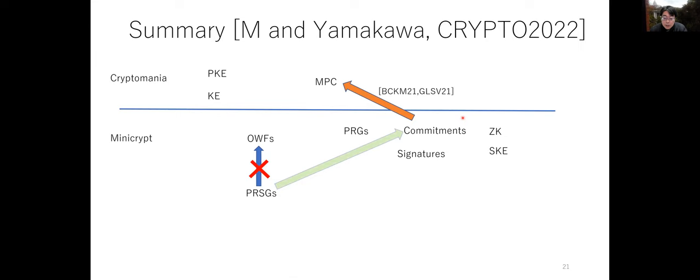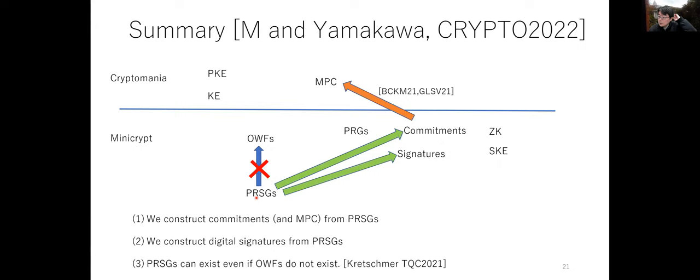To summarize the results of this paper: we constructed quantum commitments from pseudorandom state generators, which also implies multi-party computation from PRSGs. We also constructed quantum digital signatures from PRSGs. Since PRSGs can exist even without one-way functions, these primitives can be constructed without one-way functions.